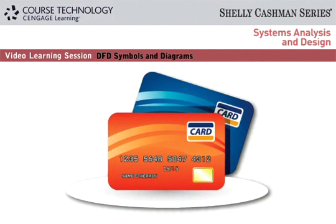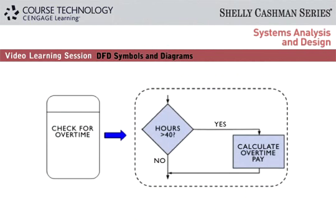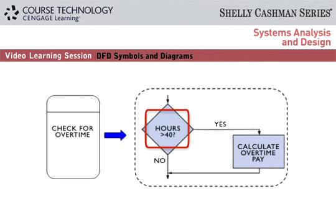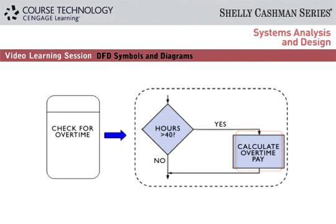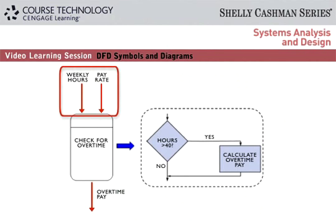We can use a flow chart to show what goes on inside a process. A process can contain many other functions that are not visible until you open the process and look inside. In this example, the check for overtime process determines whether an employee worked more than 40 hours. If so, it runs an internal process called calculate overtime pay. The check for overtime process has weekly hours and pay rates as input data and produces overtime pay as output data.